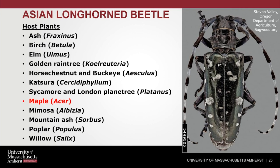Asian Longhorned Beetle is well-known as a pest of maple — particularly red maples, but also sugar maple — of concern to everyone who enjoys maple syrup. The host plant list for Asian Longhorned Beetle is quite extensive — there are 12 total genera that are impacted or have the potential to be impacted by this insect, so it's not just maples.